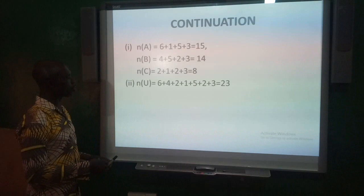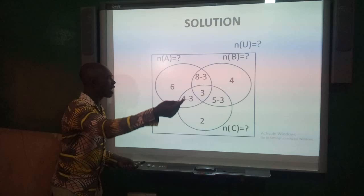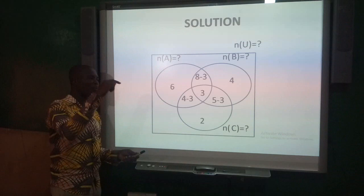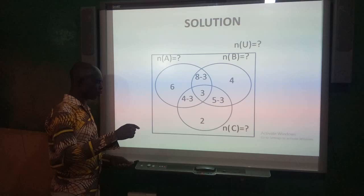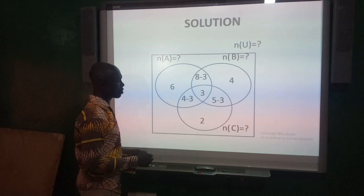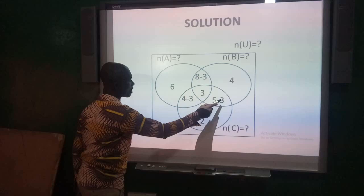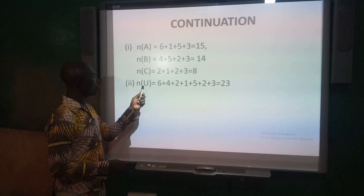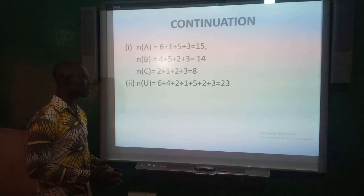For n(U), since the complement is zero, n(U) = n(A union B union C). We add all figures in the three circles: 6 + 4 + 2 + 1 + 5 + 2 + 3 = 23. Therefore the universal set n(U) = 23.